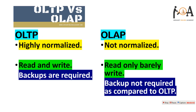OLTP is highly normalized — it uses many tables and is in 3NF, the third normalization form, using many data tables. But OLAP is basically denormalized, or not normalized.